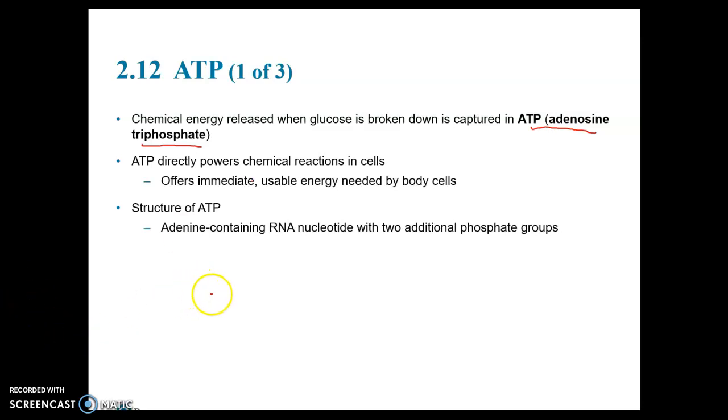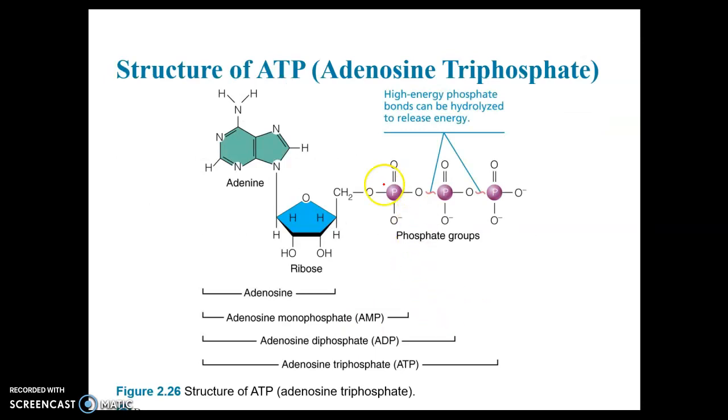The structure of ATP: it's an adenine-containing RNA nucleotide with two additional phosphate groups. So you've got the nucleotide that contains adenine, and it's already got a phosphate group, and then you add two more. That's where you get triphosphate from. Here's the adenine, here's the ribose sugar, and then here's the three phosphate groups. The potential energy is stored in the bonds of the phosphate groups. When those bonds between the phosphate groups are broken, that's when the energy is released and powers a lot of the processes that occur in our cells.